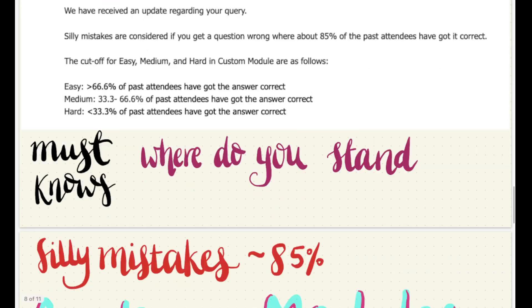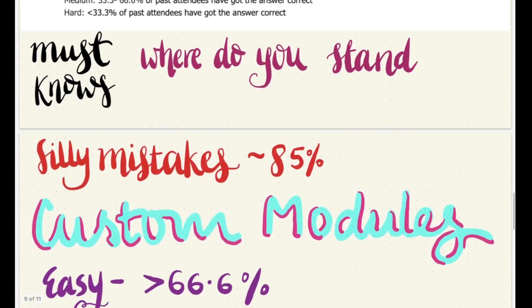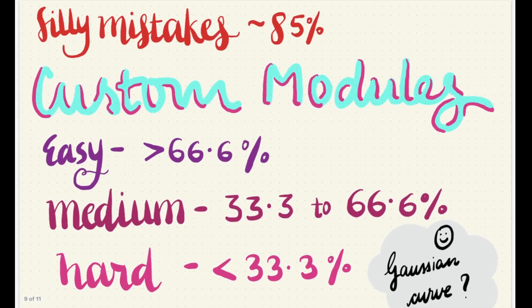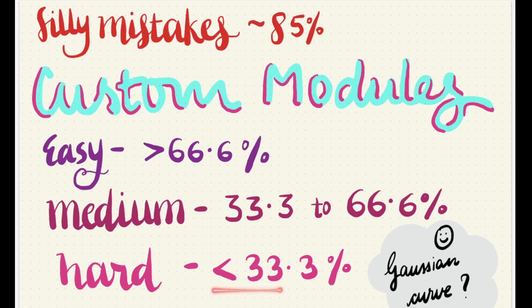The mail looked a lot like a Gaussian curve, and it felt very significant and helpful for doing the question bank and making custom modules. Specifically: silly mistakes accounts for more than 85% of people getting that question correct; easy is more than 66.6% getting it correct; medium is from 33.3% to 66.6%; and hard is less than 33.3%.